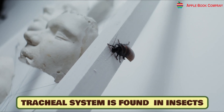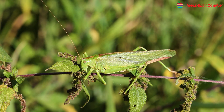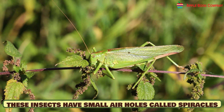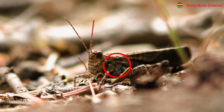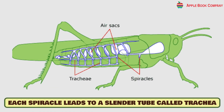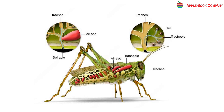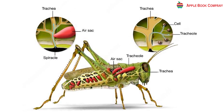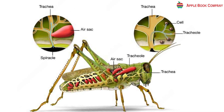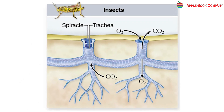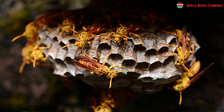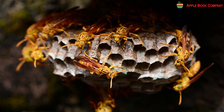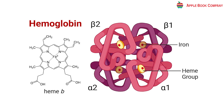The tracheal system is found in insects like cockroaches and grasshoppers. These insects have small air holes called spiracles on the sides of their body. Each spiracle leads to a slender tube called trachea that reaches deep into the body, delivering oxygen to the tissues. The tissues give out carbon dioxide into the trachea, which is released into the environment through the spiracles. The blood of insects does not have the oxygen carrier called hemoglobin.